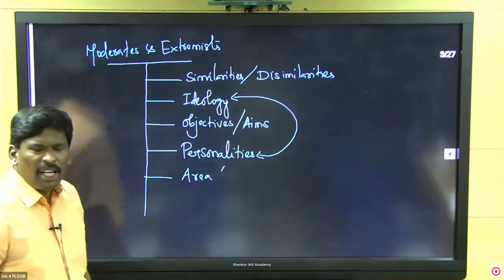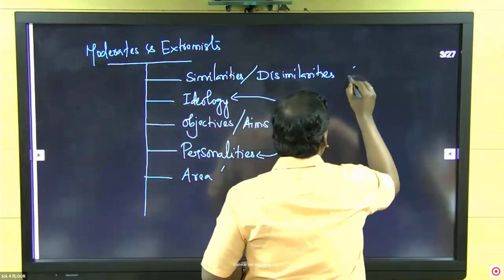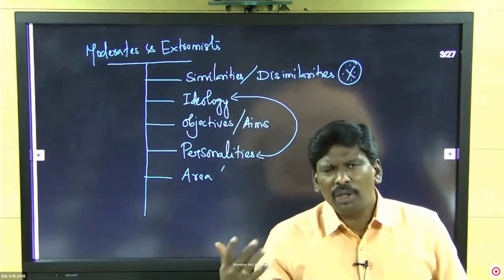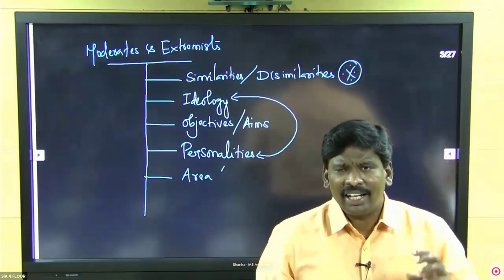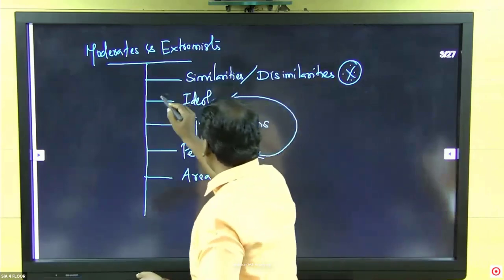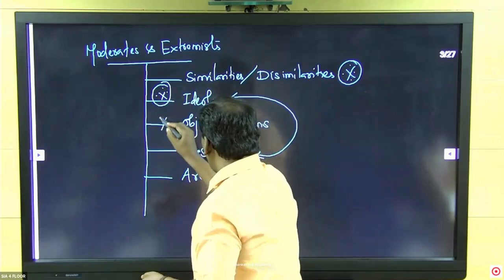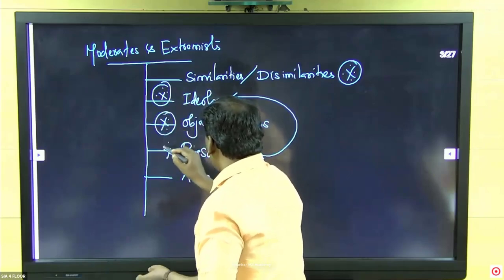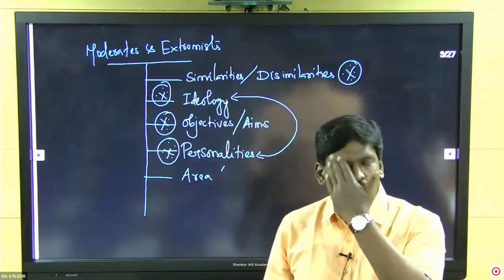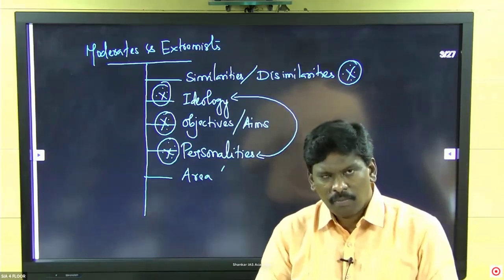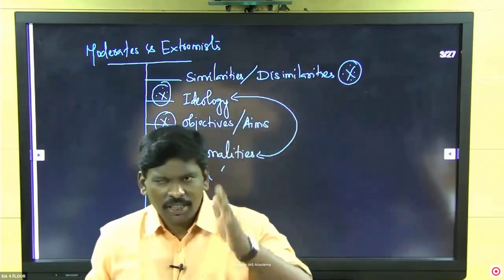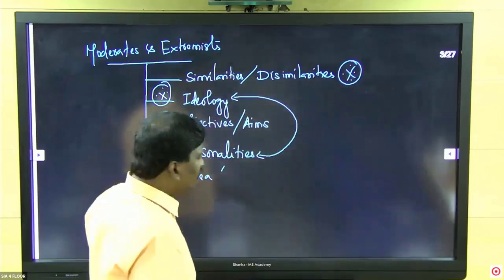In the last 25 years of question papers, questions on similarities and dissimilarities between Moderates and Extremists are asked repeatedly, roughly every two years. Ideologically they are asked, objectives and aims are also important. Moderates and Extremists is one of the most important and regularly asked topics — you must focus on all these aspects.